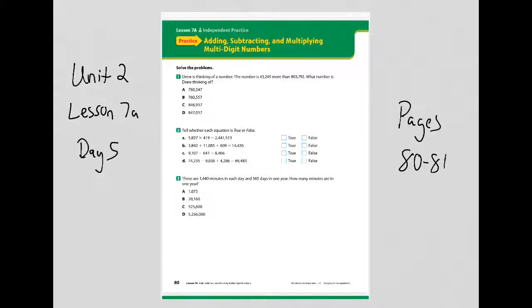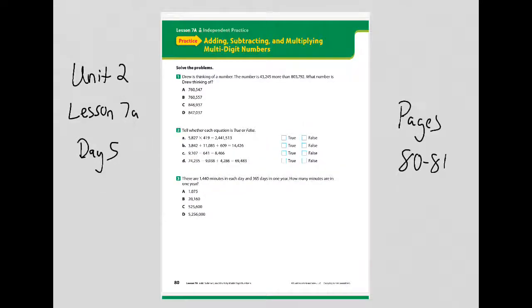What's up 6th grade, this is lesson 7a day 5, so make sure your math book is on page 80 and 81. If not, pause the video and go get your math book. You're not allowed to use any calculator for any of these problems. You are going to work on 1 through 5 — there are 3 on page 80 and 2 on page 81.